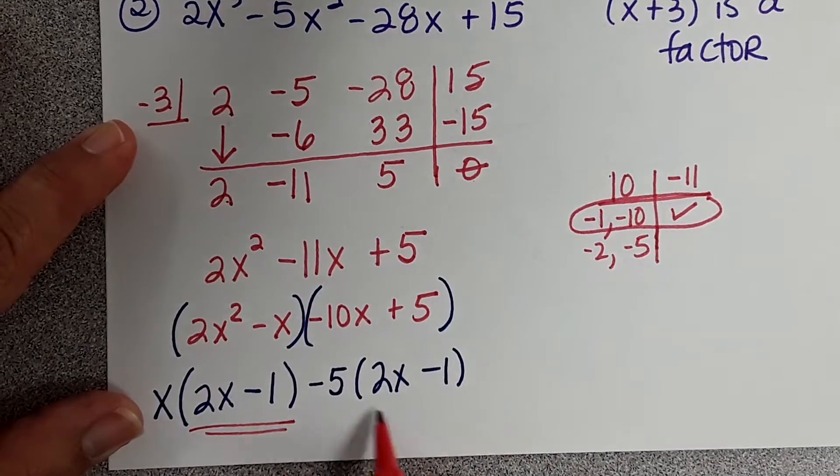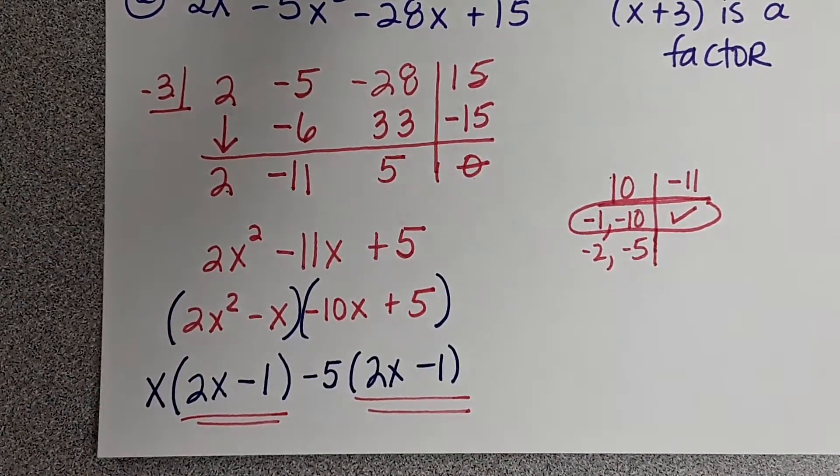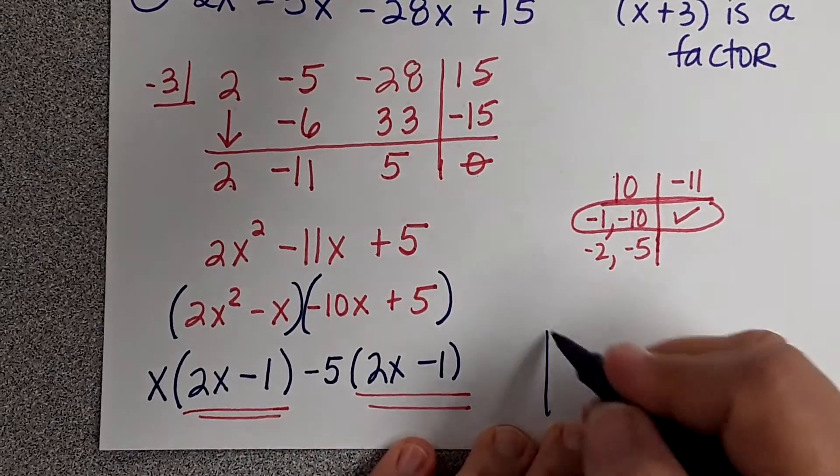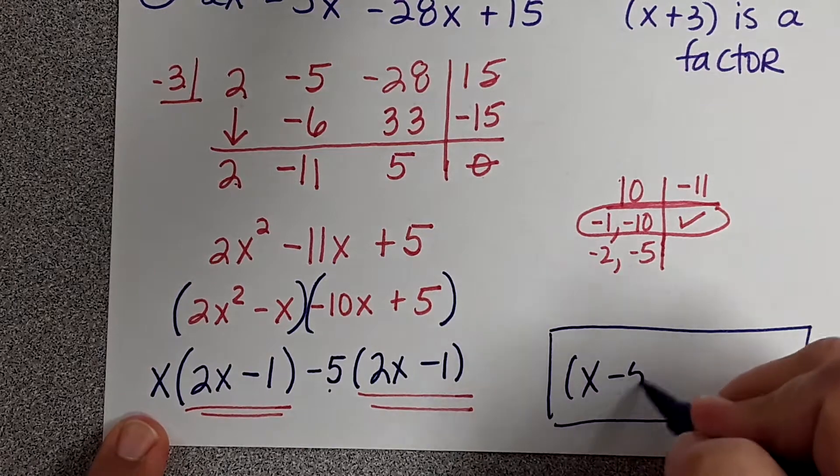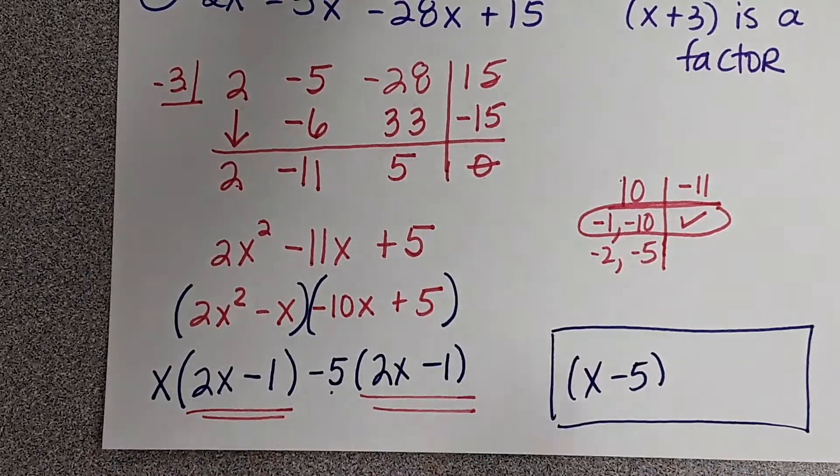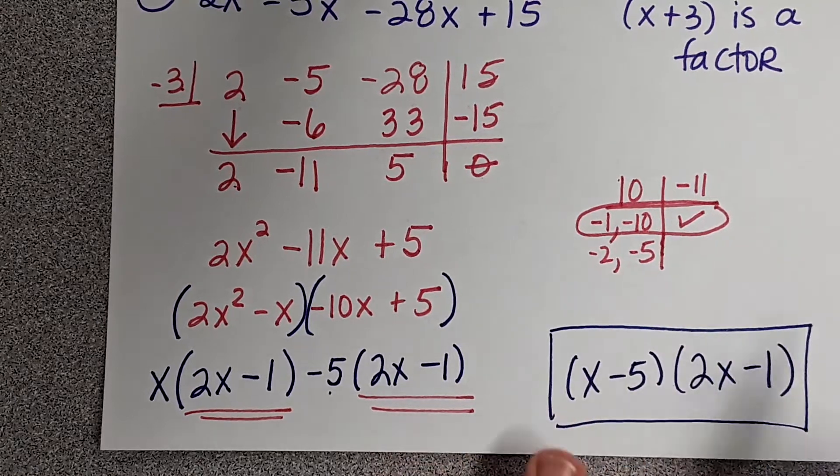Look, guys. These match, right? In factoring by grouping, we always want those to match. So my final answer is x minus 5, and then that parentheses, 2x minus 1. Those are the remaining factors.